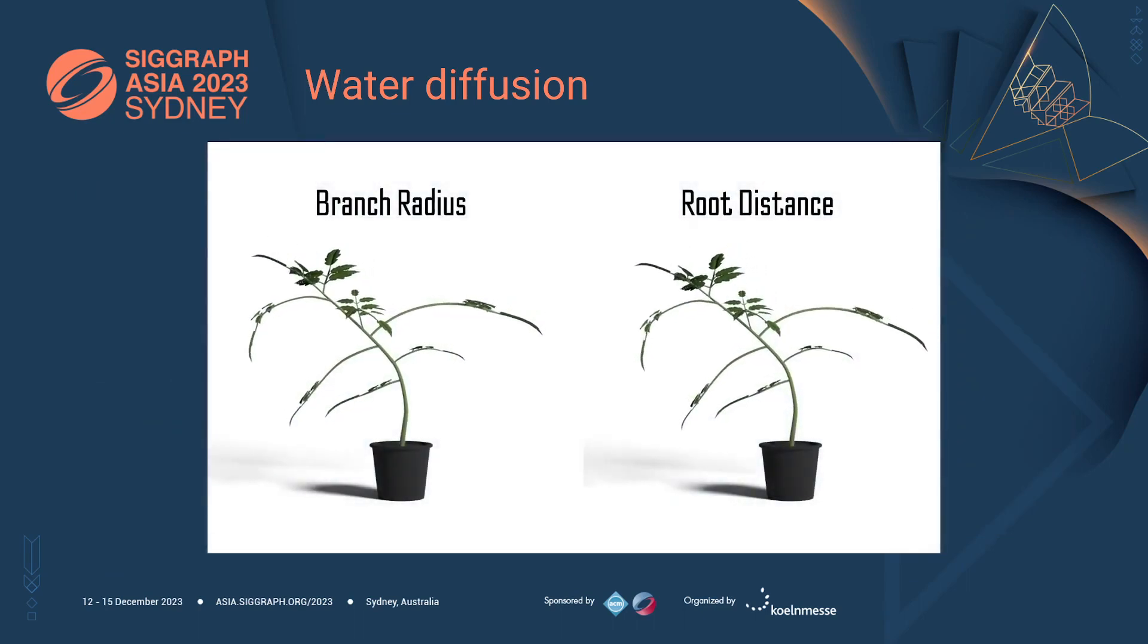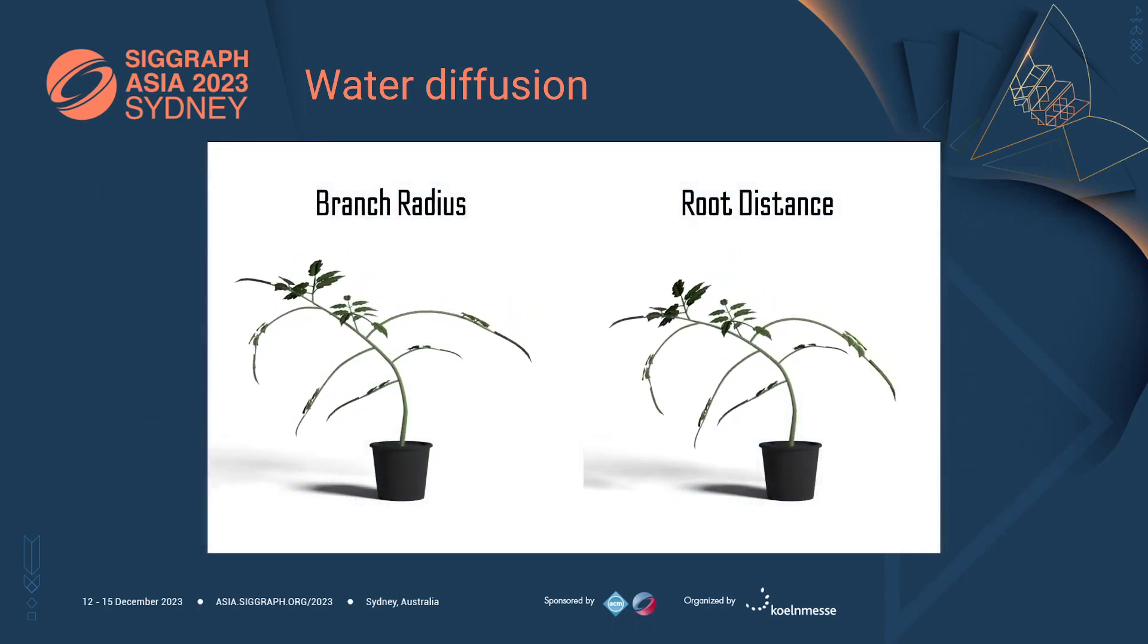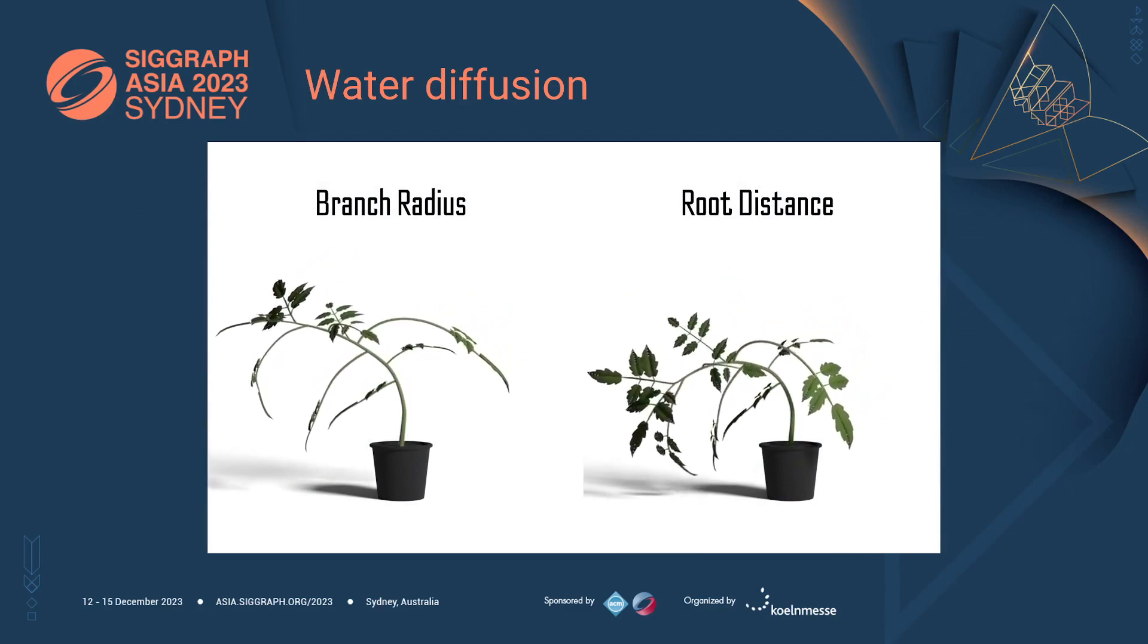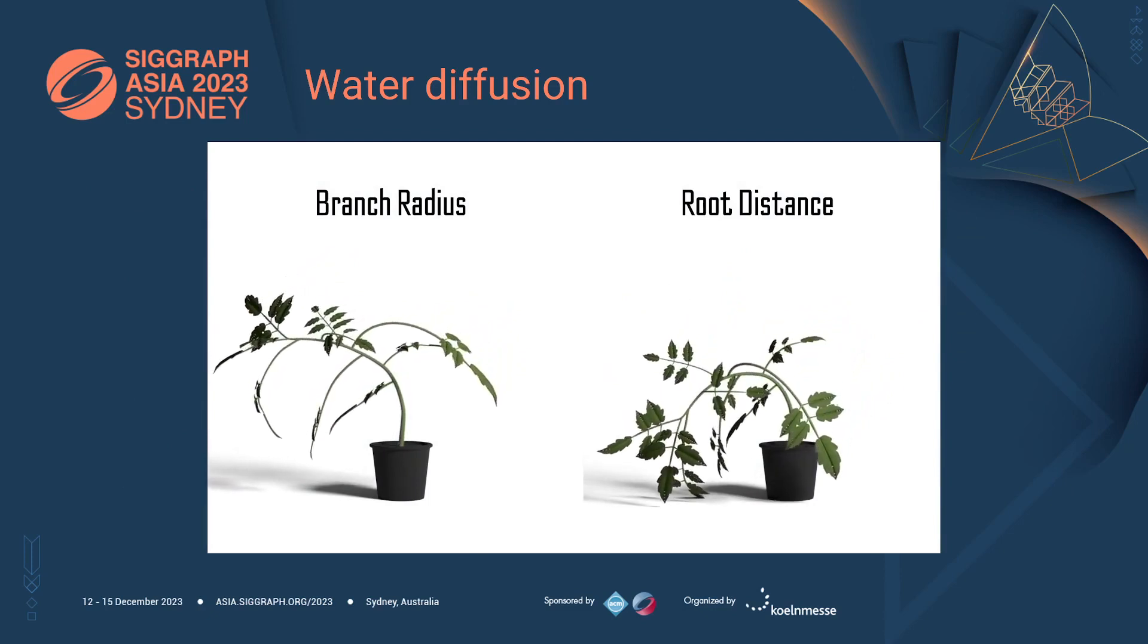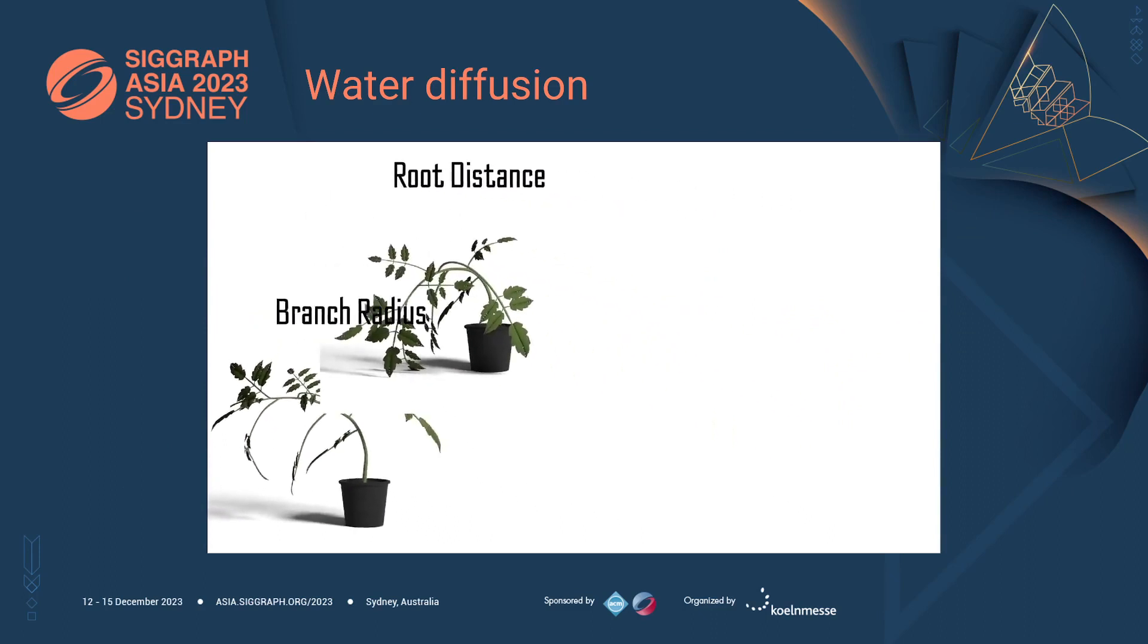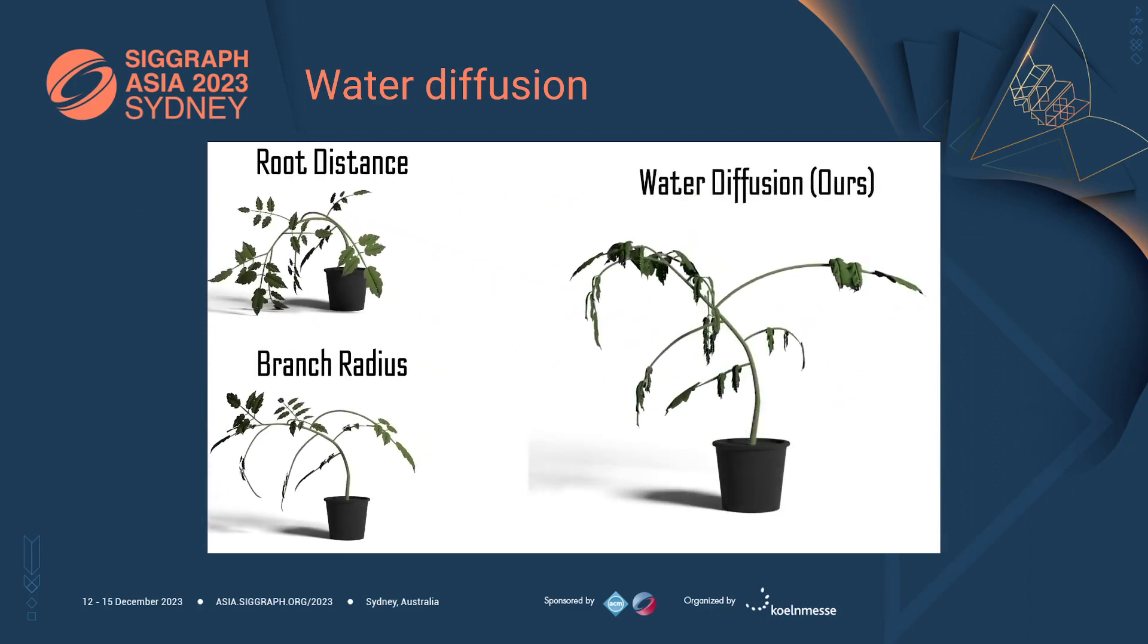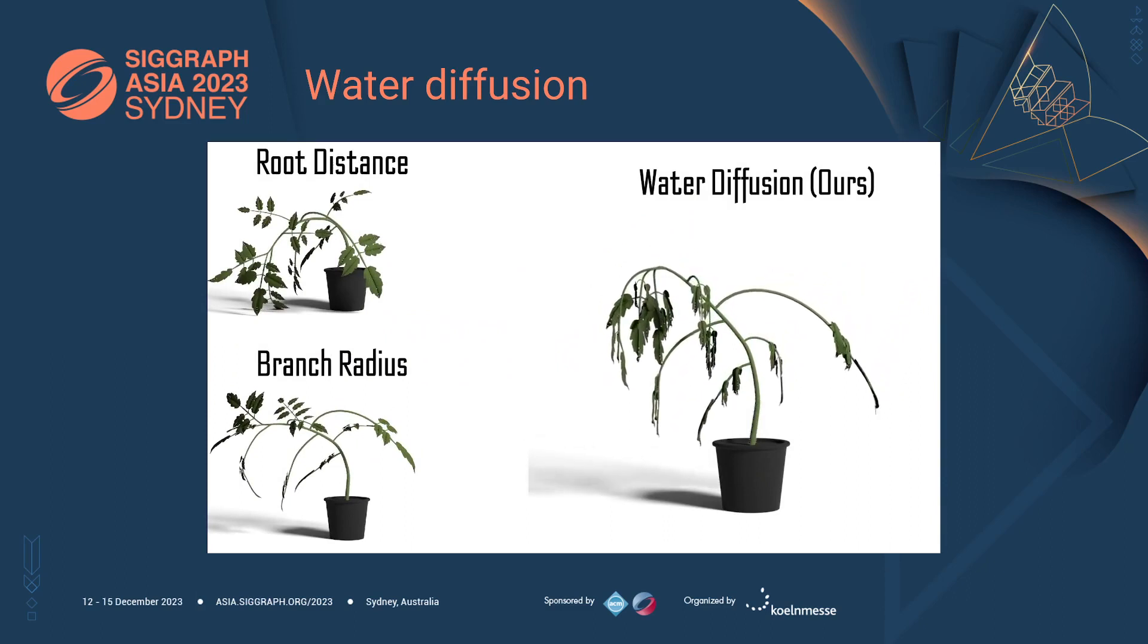We already discussed how simple functions of the plant's parameters are unsuitable to describe the plant's stiffness, as they do not capture the complexity of the wilting process. In contrast, our method is based on the actual physics of the water diffusion. It achieves better results and looks much more realistic. The animation captures the typical bending that can be observed on real plants and looks much less plastic and elastic.